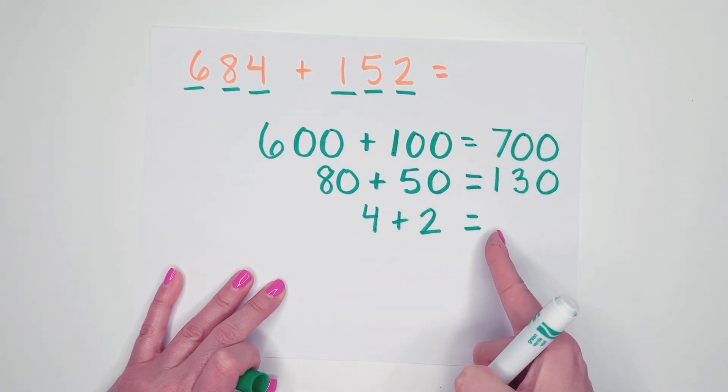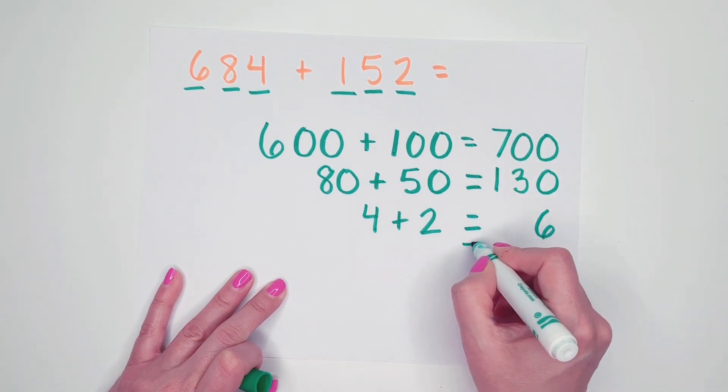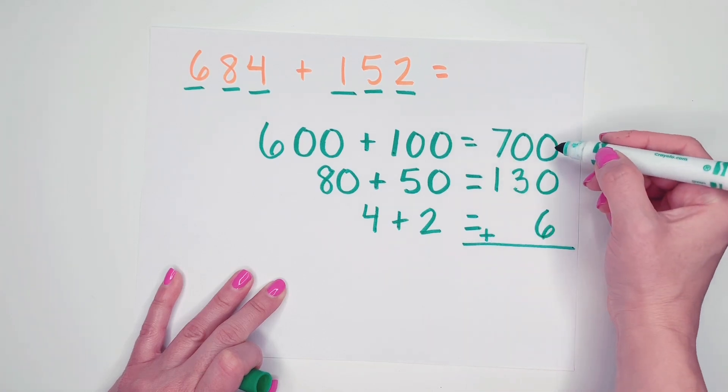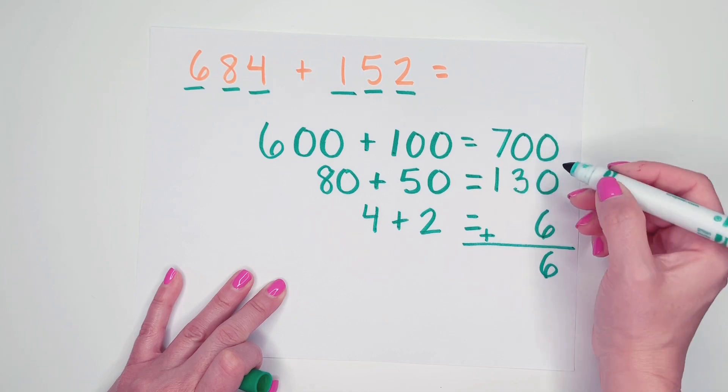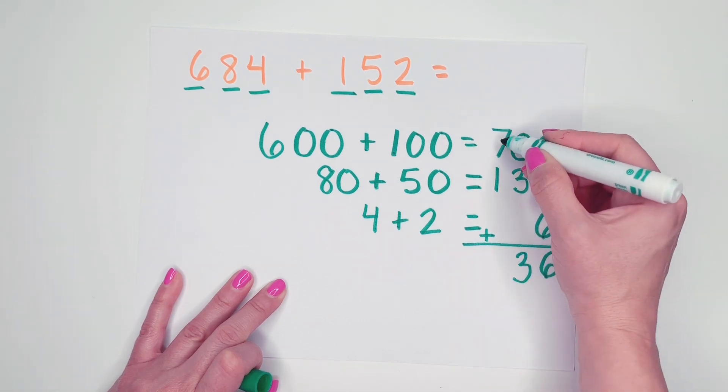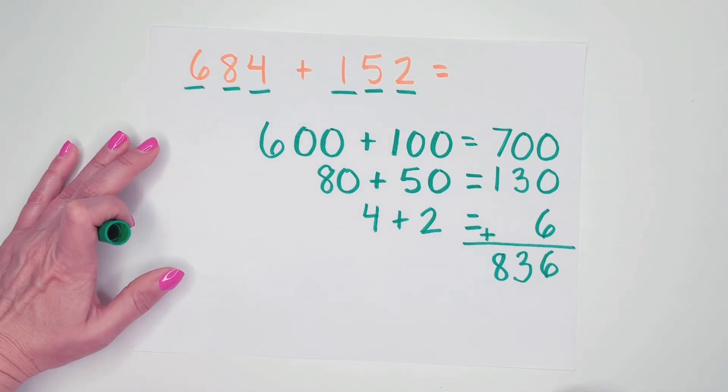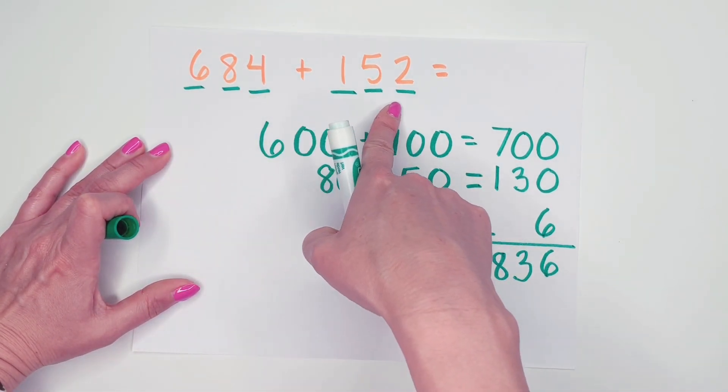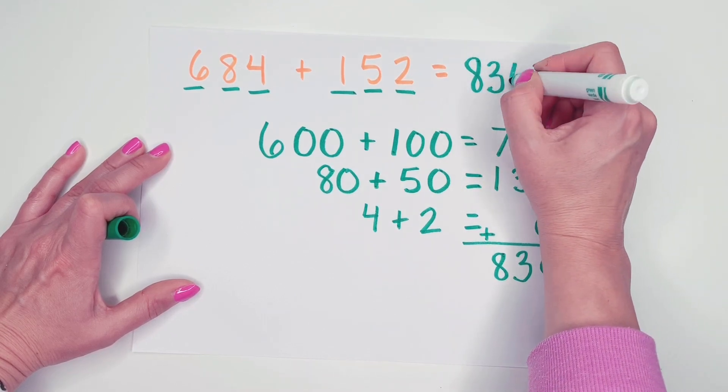I'm not going to write it in my hundreds column. I'm not going to write it in my tens column. I'm going to make sure I write it in my ones column. 0 plus 0 plus 6 is 6. 0 plus 3 is 3. And 7 plus 1 is 8. So 684 plus 152 is 836.